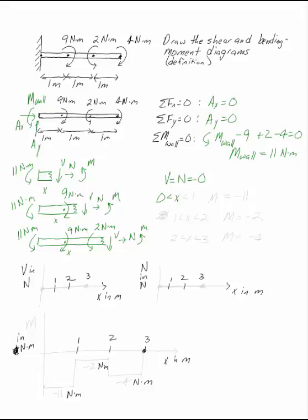For the first case, with zero less than x less than one, my moment is negative eleven. For the second one, where I have 1 less than x less than 2, my moment is negative 2. And for 2 less than x less than 3, my moment is negative 4.